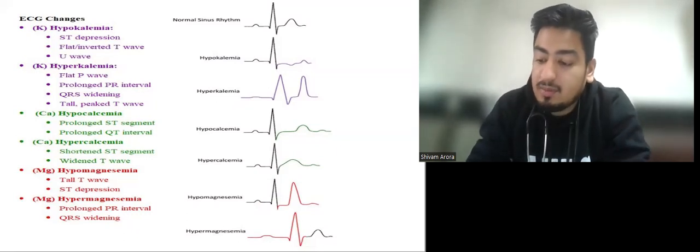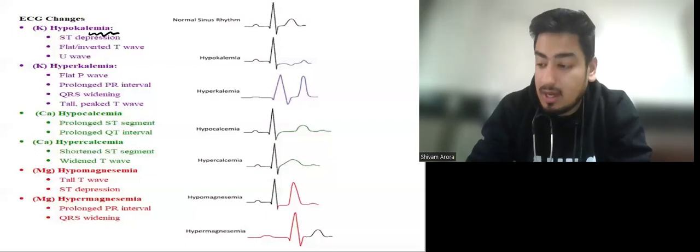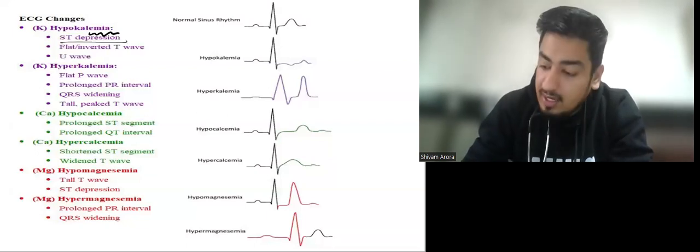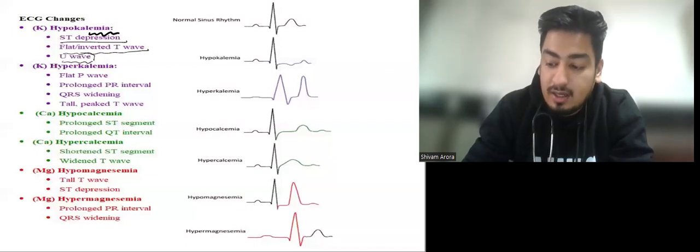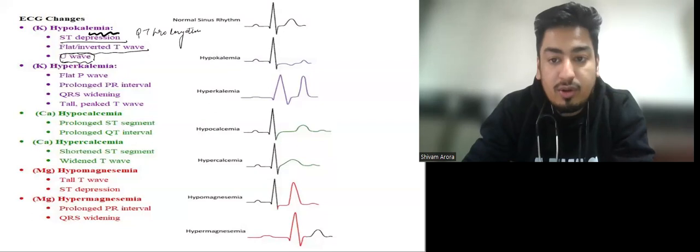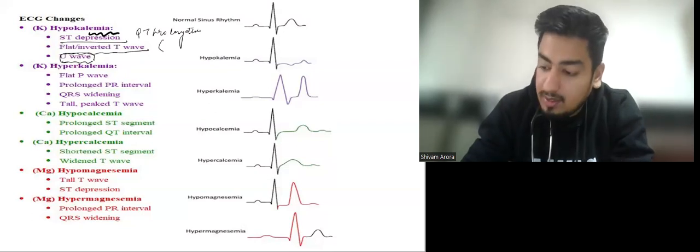The first electrolyte abnormality is hypokalemia. In hypokalemia we have ST depression, flat or inverted T wave, and a prominent U wave. Along with this there is QT prolongation, but the QT prolongation in hypokalemia is a pseudo-QT prolongation.